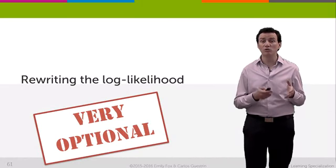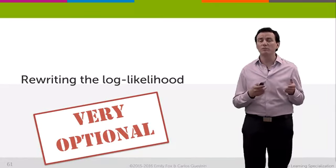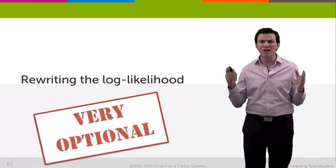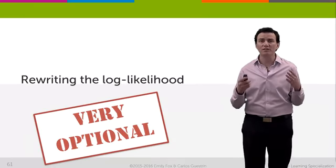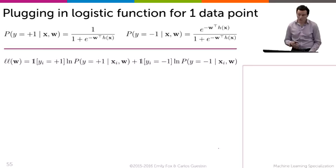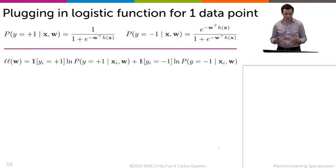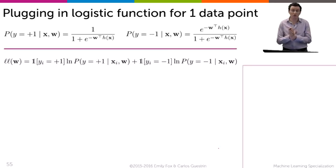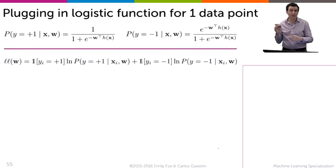We've now seen how to express the probability of y equals plus 1, probability y equals minus 1, and we're going to plug those into the log likelihood before we take its gradient. This is still part of that very optional derivation that we're doing of the gradient of logistic regression. Now we have probability y equals plus 1, probability y equals minus 1, and we can go ahead and plug those into a log likelihood function with the indicators and all that.